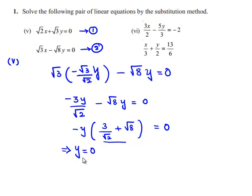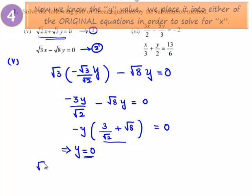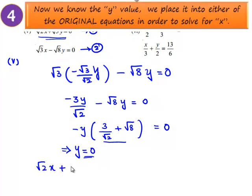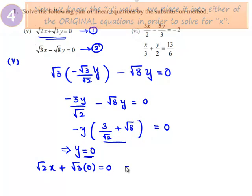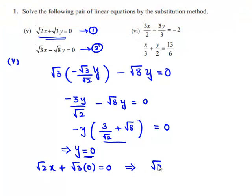Now substitute y is equal to 0 in equation number 1. We will get root 2 times of x plus root 3 times of 0 is equal to 0. That implies root 2 times x is 0, that is nothing but x is also equal to 0.